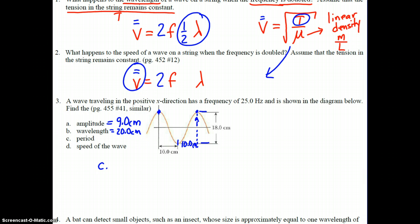Part C: The period, we know, is the inverse of the frequency. We are given the frequency as 25 hertz, so the inverse of 25 is 0.04 seconds.